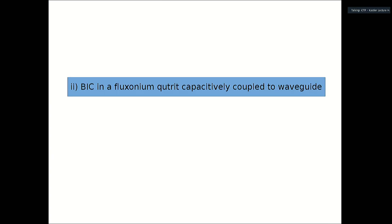This concludes the section on three-Josephson-junction qubits, though I think the results can be extended to other types of persistent current qubits.